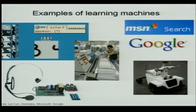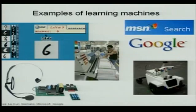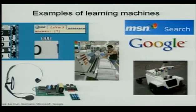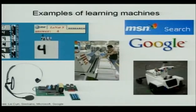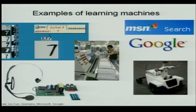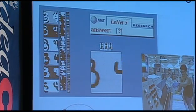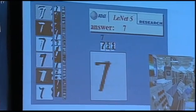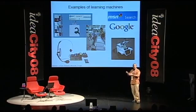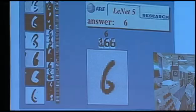Here are some cool examples from the past — including Google and Microsoft searches. One of the first good demonstrations of machine learning capability is a system that recognizes handwritten digits, actually used by the US Postal Service to recognize zip codes on envelopes. It was trained by being shown pairs of handwritten digits plus which digit it was — here's a 3, here's a 2 — and now it can identify digits it's never seen before.